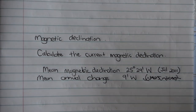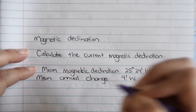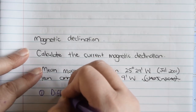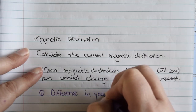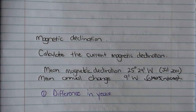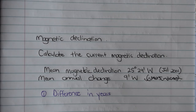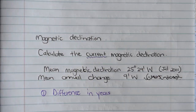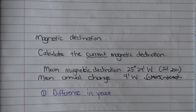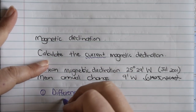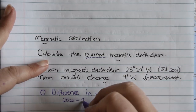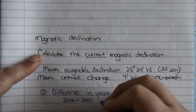Now we can go through the steps to calculate the current magnetic declination. The first step is to find the difference in years. This map was constructed in 2001, but how do we determine how many years have passed? The word 'current' tells you — current means the year you are in, which in this case is 2020. Next year it will be 2021, so every year the answer will differ. You take the current year and subtract the older one, which gives you 19 years.